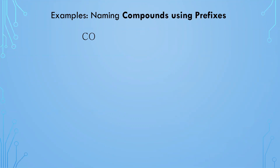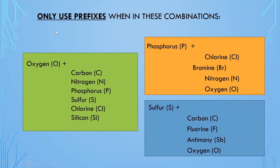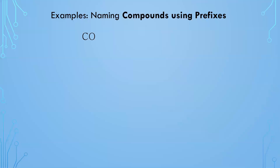For CO — carbon and oxygen — I check my chart: carbon plus oxygen means use a prefix. There is one carbon and one oxygen. We never say mono on the first element, but the second element always gets a prefix. So this is carbon monoxide. I said the name of the first element, carbon, then oxygen became oxide, and I used the subscript one to give mono. Carbon does not get mono because it's the first element.